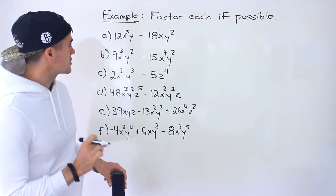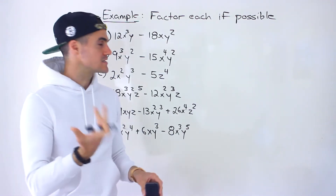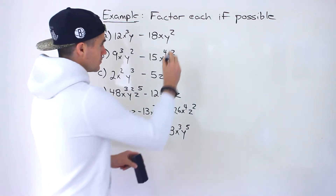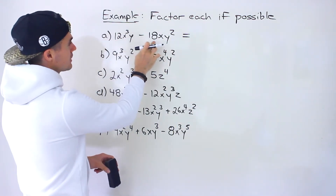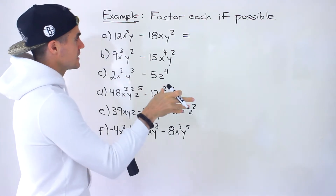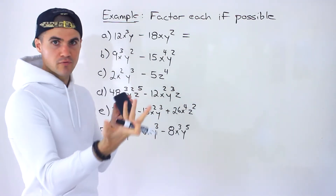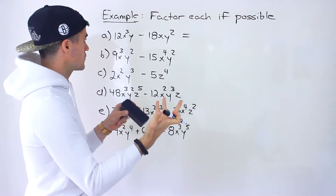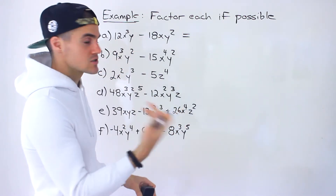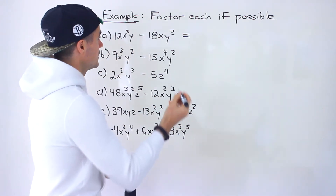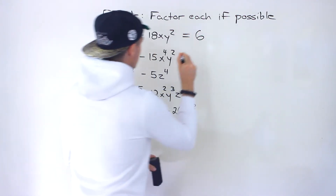We've got 12x cubed y minus 18xy squared. Let's first start off with the constants 12 and 18. What would be the greatest common factor between those? It would be 6 — 6 goes into 12 and 18 smoothly. So we can definitely take out a 6 from both.